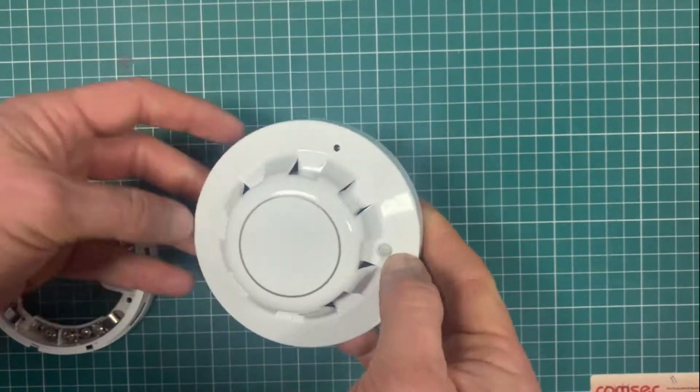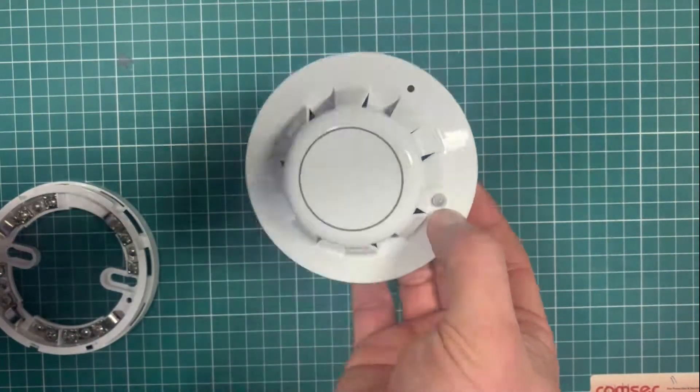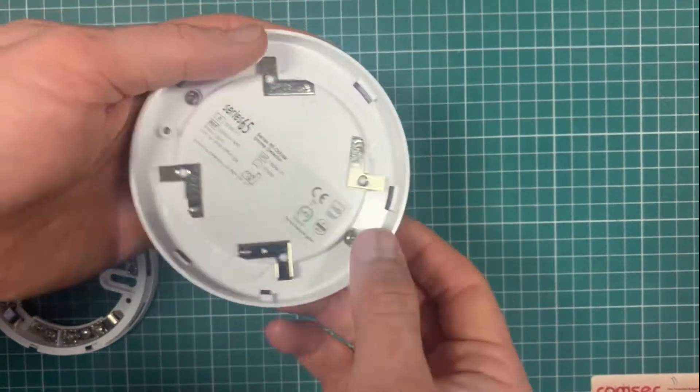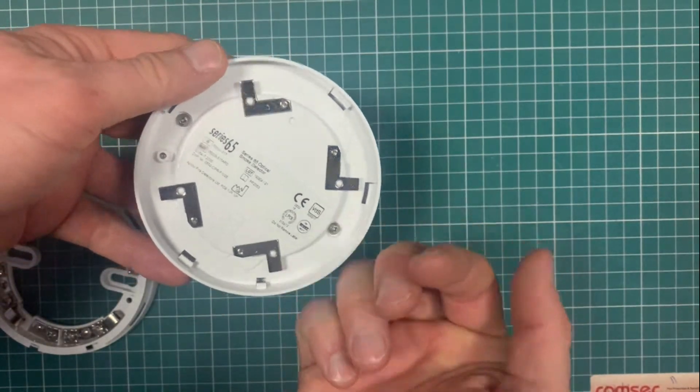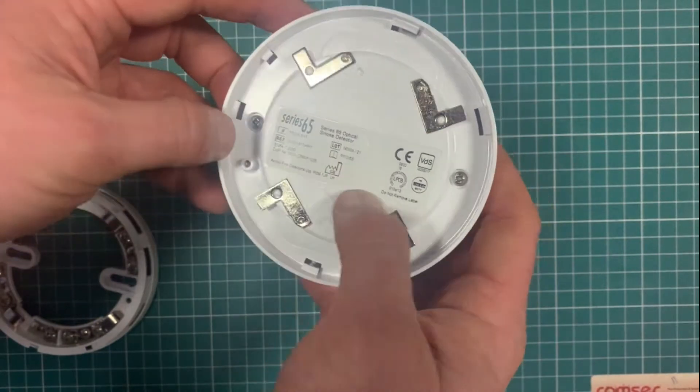The optical detector, little known fact, has a clear LED. If you're looking at the ionization one, it has a red LED. So if you're ever looking at it from the floor level below and wondering whether it's an optical or an ion, that's a way of telling.